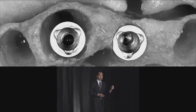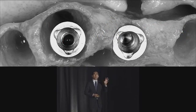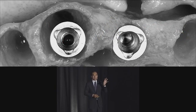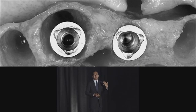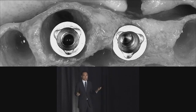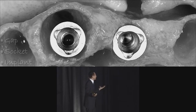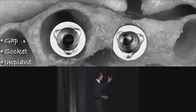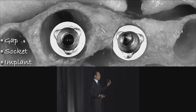Every time we put an implant into a socket — immediately, an anterior socket — there are three things we need to consider in order to make it work. That's pretty much given: the gap, the socket, and the implant.